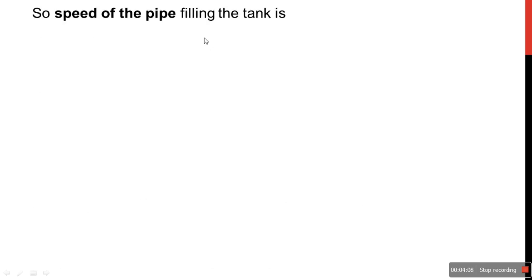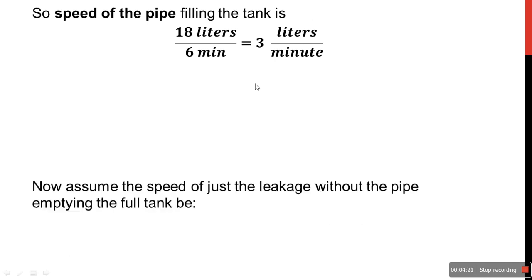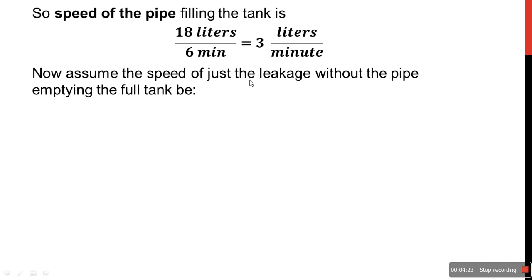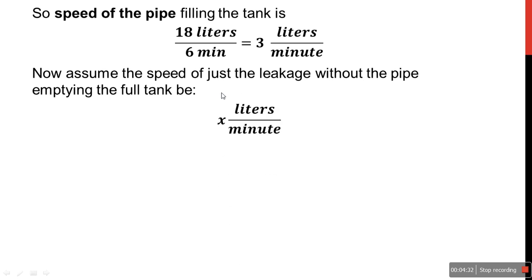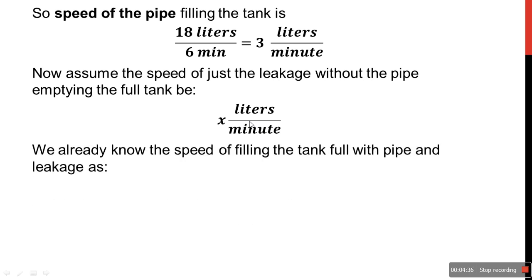The speed of the pipe filling the tank is 18 liters in 6 minutes, so the efficiency of the pipe is 3 liters per minute. Now we need to find the speed of just the leakage — we don't know it, so we'll assume the speed of the leakage without the pipe to be x liters per minute.